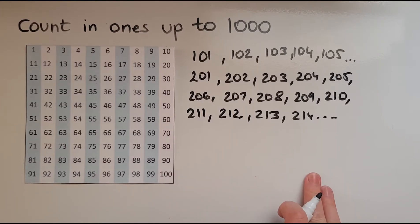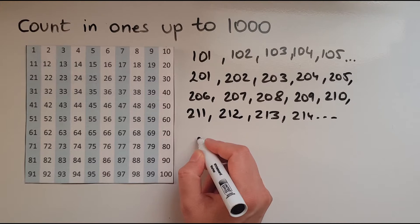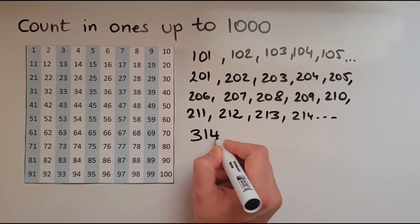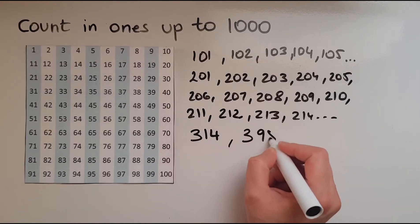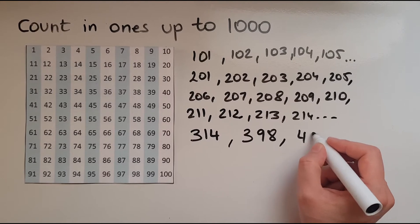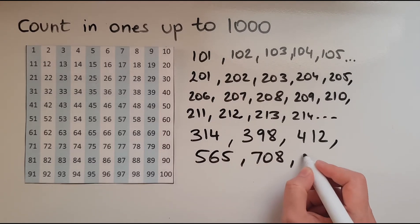So I'll just write a few examples in terms of how to write them and how to read them. So 314. This would be 398, 412, 565, 708, 800.